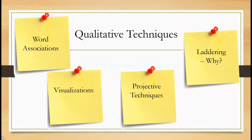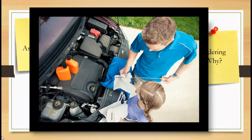Some qualitative techniques include word associations, visualizations, projective techniques, and laddering — meaning asking why, why, why, sort of like a child. One favorite is word associations: you look at different pictures and ask what do you see. Not everyone sees a picture the same way, and this helps you understand how people view your products, brand, or situations where your products are used.